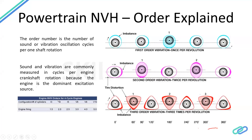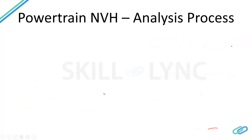Based on this, we can identify what orders a given engine will produce. An inline-3 (I3) engine will have a 1.5 order, an inline-4 (I4) will have a second order, an inline-5 (I5) will have 2.5, and a V6 will have a third order. This tells us what specific orders and frequencies to focus on so we can identify and rectify the sources and reduce vibration.